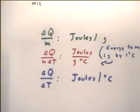On problem 12, you're given the number of joules it takes to change the temperature of a certain number of grams of a substance by a certain number of degrees Celsius.